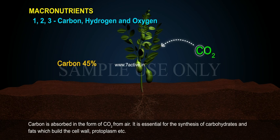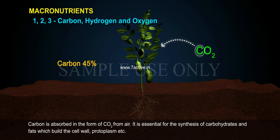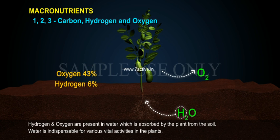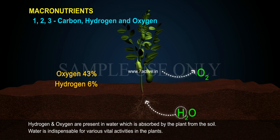Carbon is absorbed in the form of CO2 from air and is essential for the synthesis of carbohydrates and fats, which build the cell wall, protoplasm, etc. Hydrogen and Oxygen are present in water, which is absorbed by the plant from the soil. Water is indispensable for various vital activities in the plants.